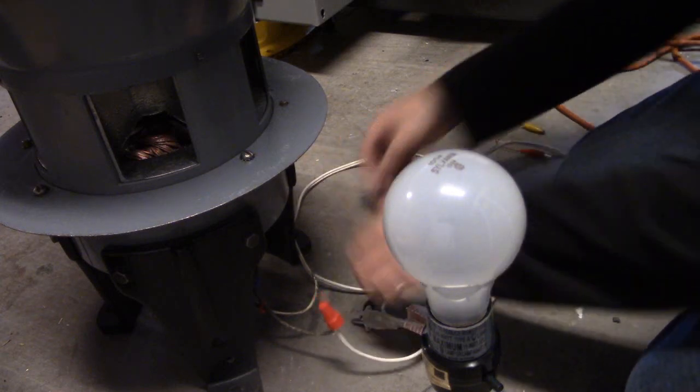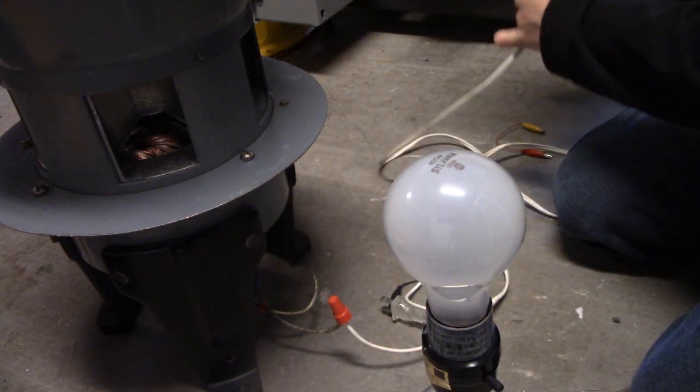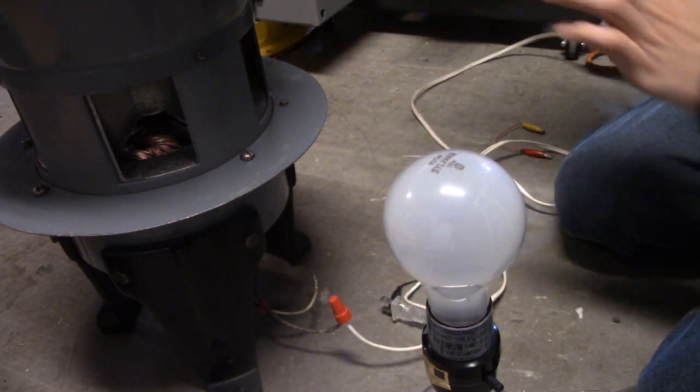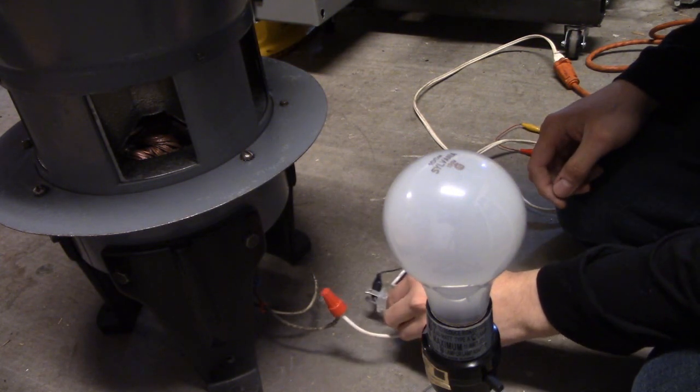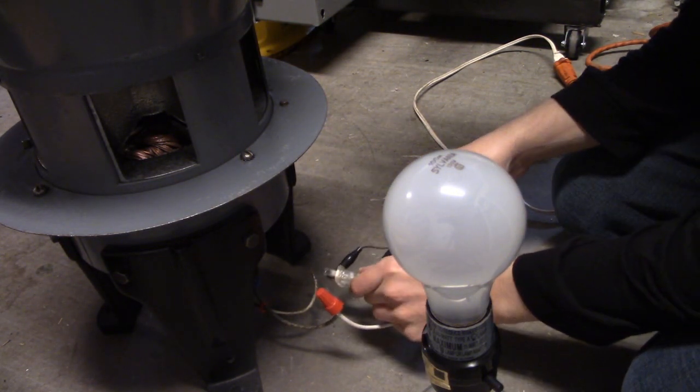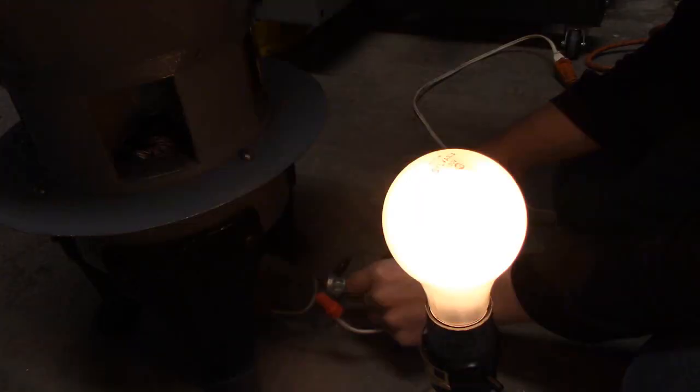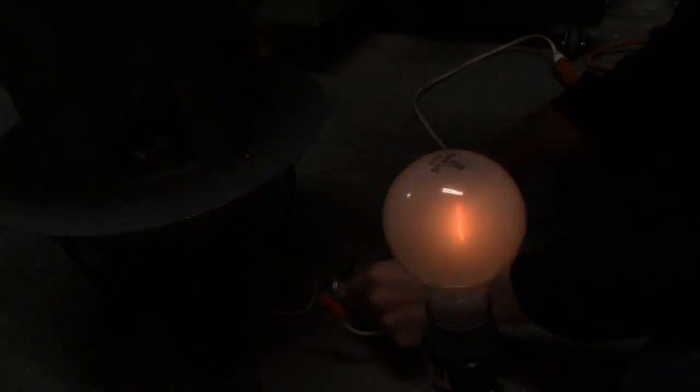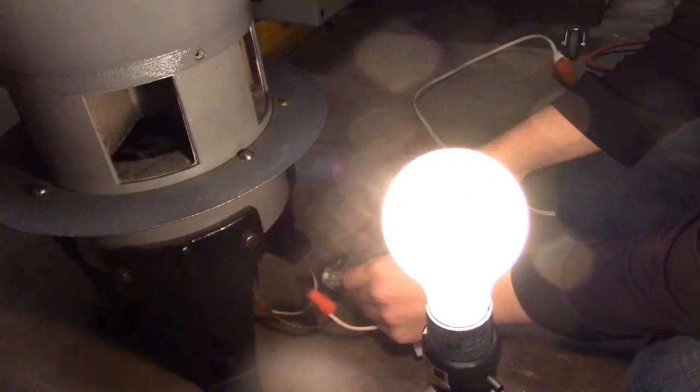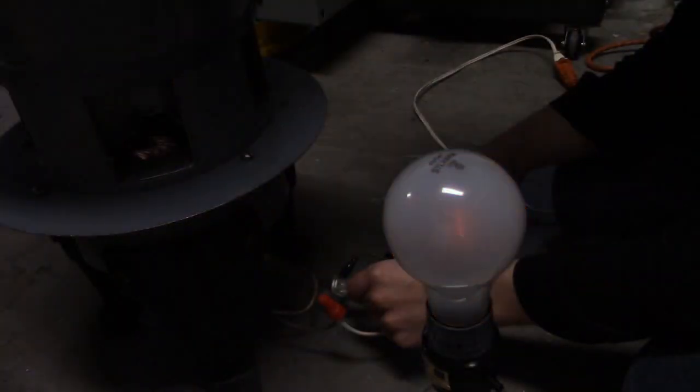And now what you're going to do, you're going to go ahead and plug this in right here. Now we're live, so do not touch any metal. What you're going to do, you're going to touch this to the Maltu. See, the light turns on. You might hear the motor hum a little bit. That's because of low voltage. That's what you want to do.